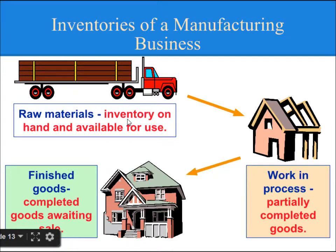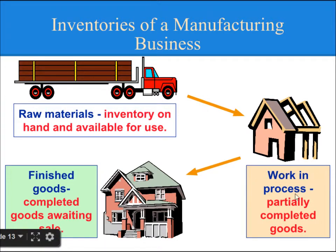You need to remember all these keywords. Raw Materials Inventory is materials on hand and available for use. Work In Process is partially completed goods. Finished Goods is completed goods.